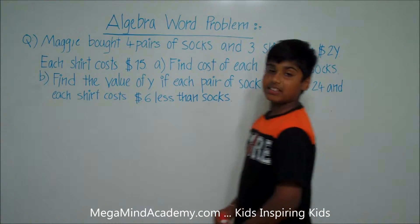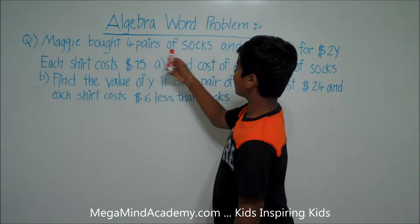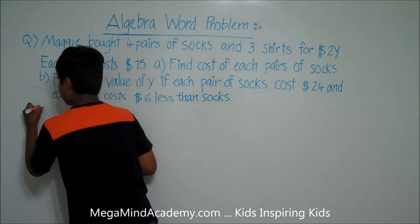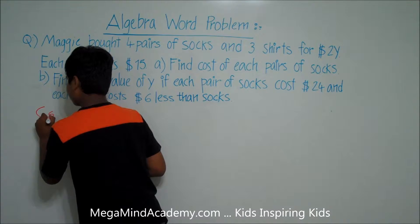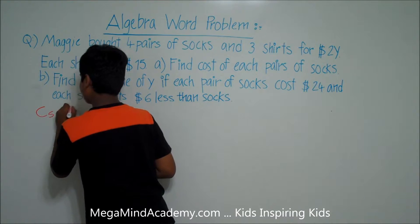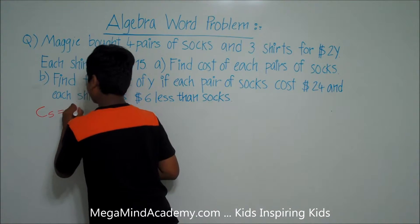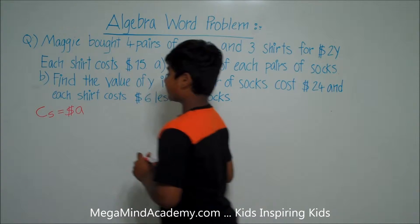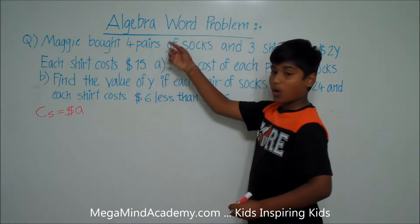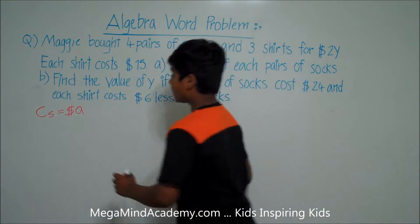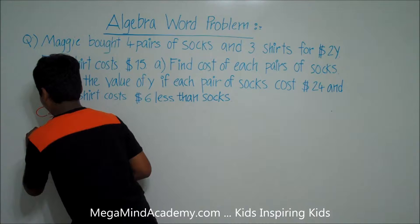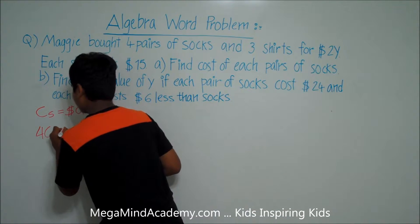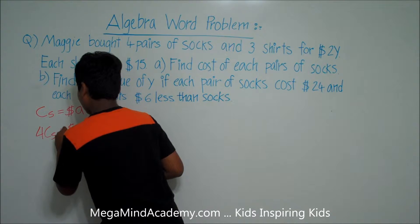Now, the problem says she bought four pairs of socks. So the cost of a sock — C for cost, S for sock — is equal to A dollars. And since she bought four pairs, the cost of four pairs of socks is equal to 4A dollars.